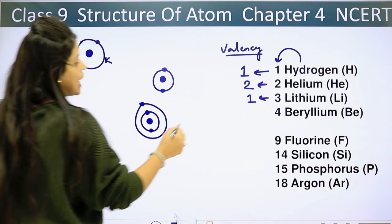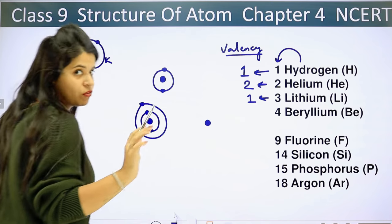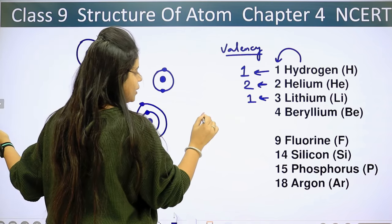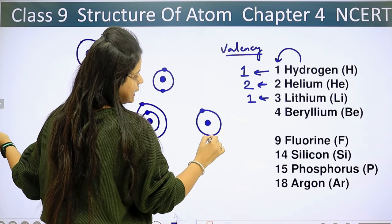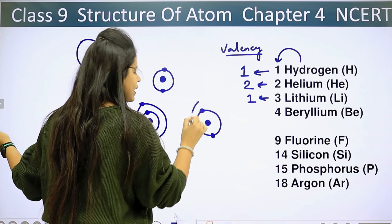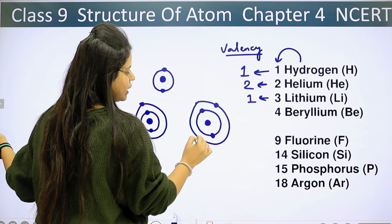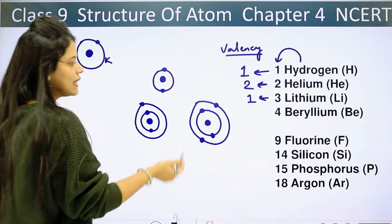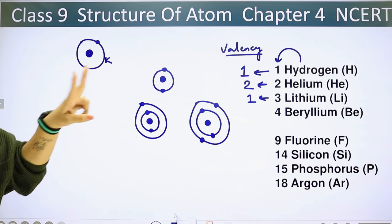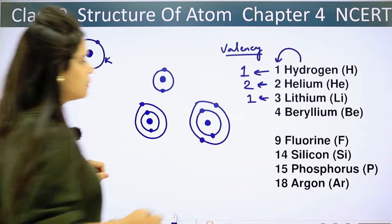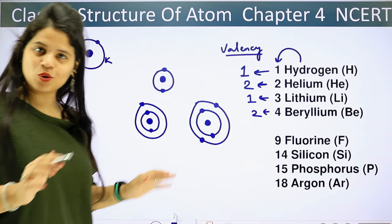Now beryllium has atomic number 4, so the number of electrons is 4. This is our nucleus. We fill the K-shell with 2 electrons, then make the L-shell and place 2 more electrons in it. Looking at the outermost shell, there are 2 electrons, so the valence of beryllium is 2.